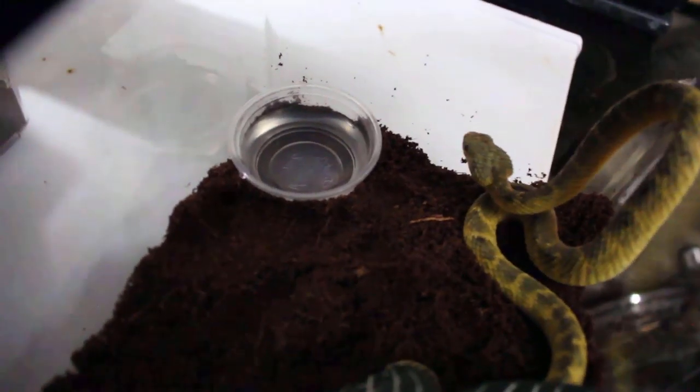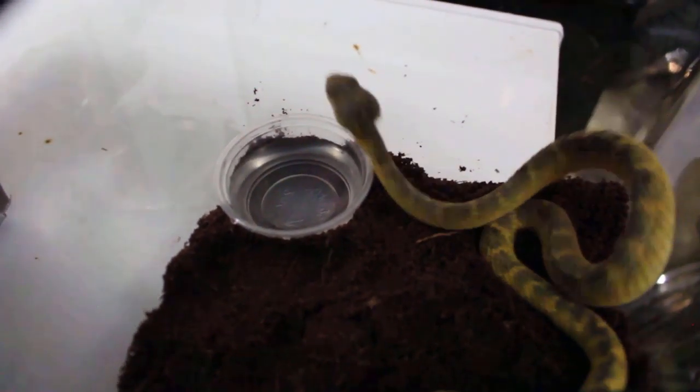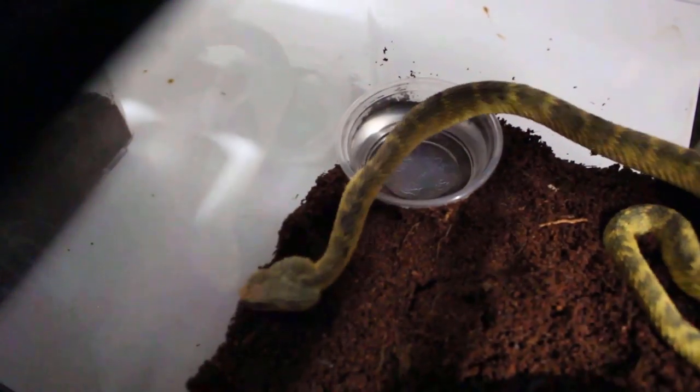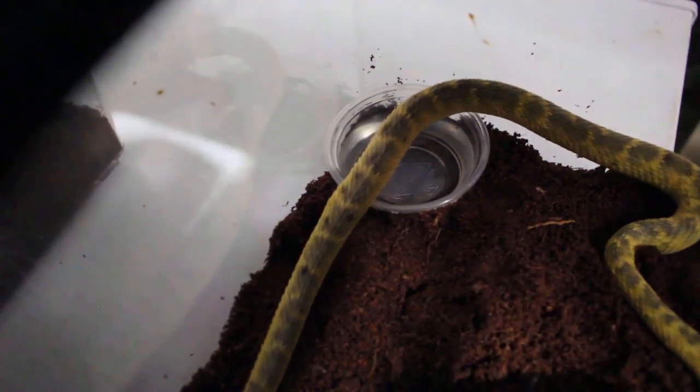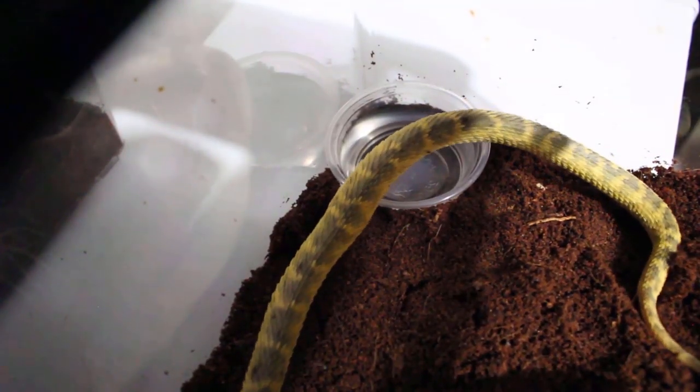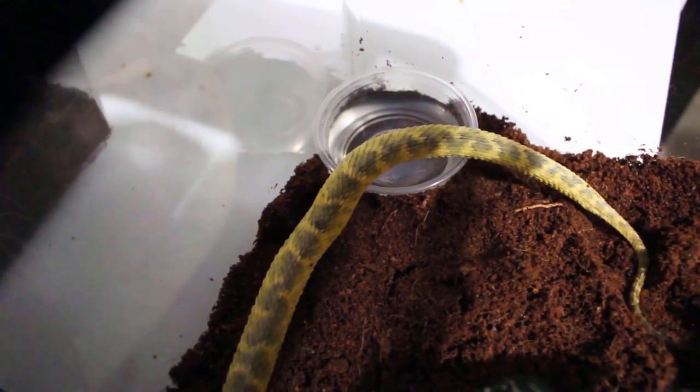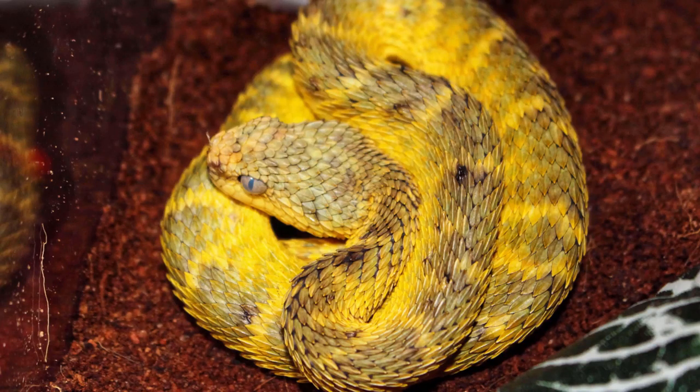These guys will actually gape a lot, like a black mamba or a cottonmouth. They'll sit there when feeling threatened and open up their mouth real wide. I'm sure you've seen the picture of the Atheris doing that.